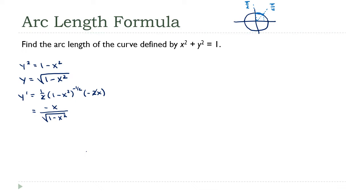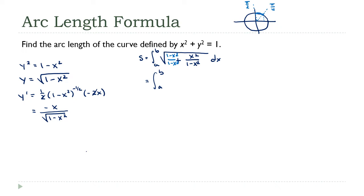Let's go to the formula. The arc length s equals the integral from a to b — and I don't know what the x values are yet — of the square root of 1 plus the derivative squared. Squaring the derivative gives x squared over 1 minus x squared. Using a common denominator, I write 1 as (1 minus x squared) over (1 minus x squared) and add them together. The x squared and minus x squared cancel, leaving the integral from a to b of the square root of 1 over (1 minus x squared) dx, which simplifies to 1 over the square root of 1 minus x squared dx.